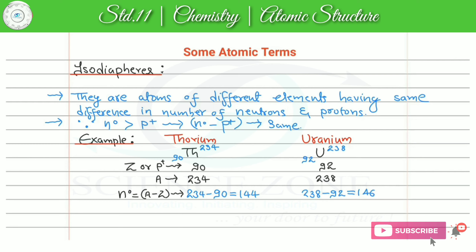अब neutron तो मिल गए। अब हम लोग isodiaphers की property check करते हैं, that is difference of neutron and proton. Neutron minus proton — for thorium: neutron is 144 and proton is 90, so difference is 54. Similarly for uranium: neutron is 146 and proton is 92, difference is also 54. So in दोनों species में, neutron minus proton is same, so ऐसी species को हम isodiaphers कहते हैं।